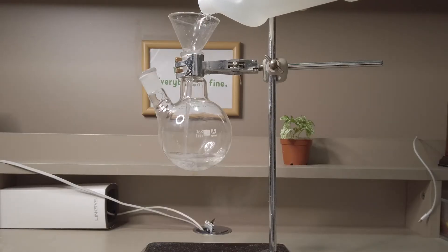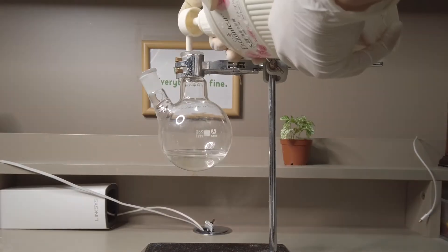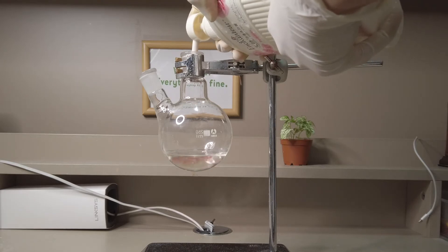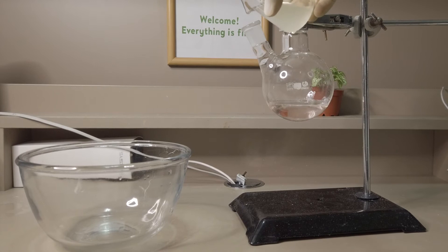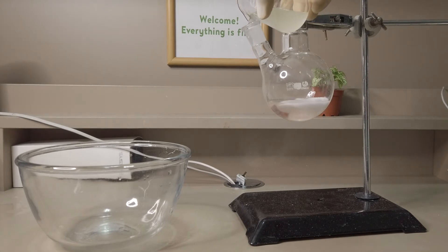Into a two-neck round bottom flask we poured in a very small amount of hydrogen peroxide followed by some soap. For the reaction to begin we poured in our sodium iodide solution.